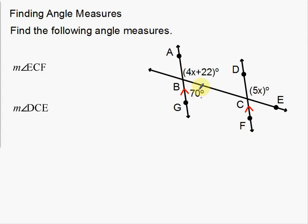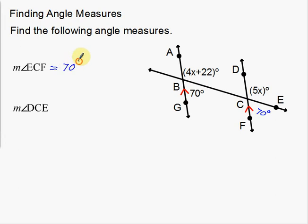So look here — this angle is 70 degrees. And then this angle down here, ECF — I want to figure out what their relationship is, so I can see if they're going to be congruent, supplementary, or something to that effect. Notice that 70 is down and to the right, and ECF is also down and to the right. That actually makes those two angles corresponding angles. With a transversal and two parallel lines, corresponding angles are congruent. So if this angle is 70 degrees, ECF down here is also going to be 70 degrees.